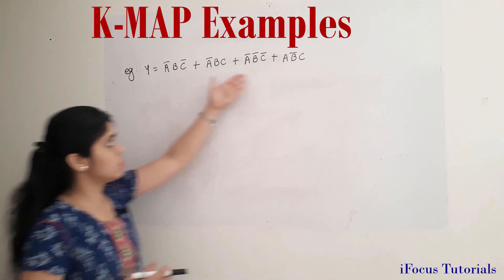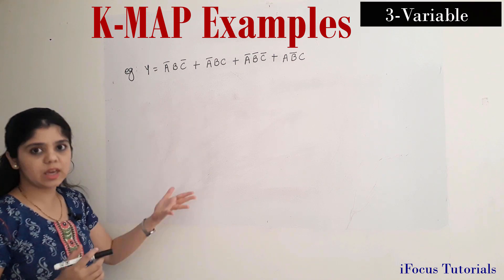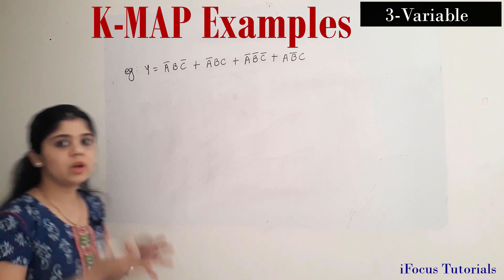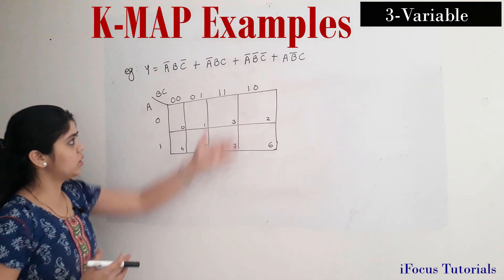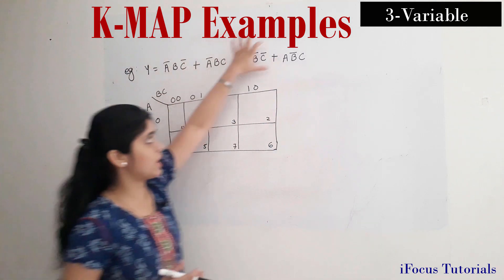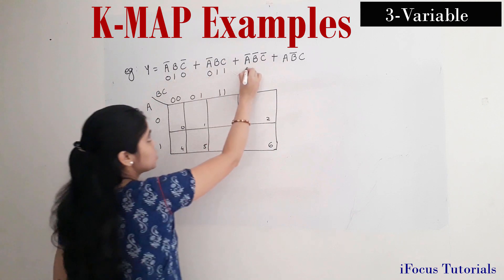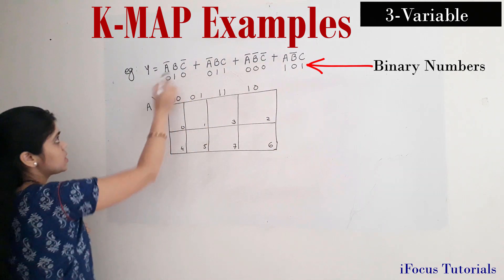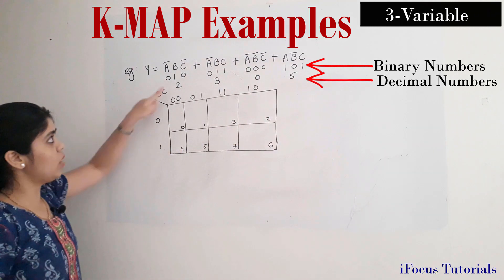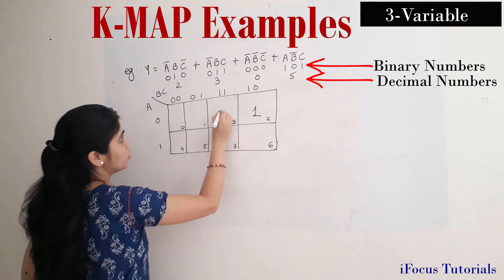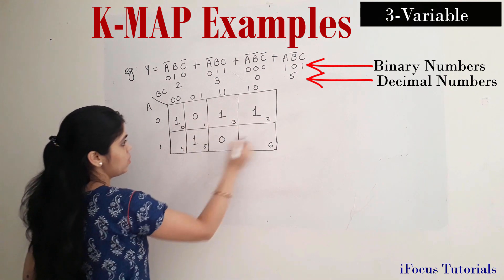The next example is given in terms of alphabets: A, B, and C. So it is clear we require a three-variable K map, and the given expression is in SOP form, so we fill with ones. I have drawn the three-variable K map. Converting the terms: 0,1,0 gives decimal 2; 0,1,1 gives 3; 0,0,0 gives 0; and 1,0,1 gives 5. So box numbers 0, 2, 3, and 5 are given a 1, and rest are given 0.